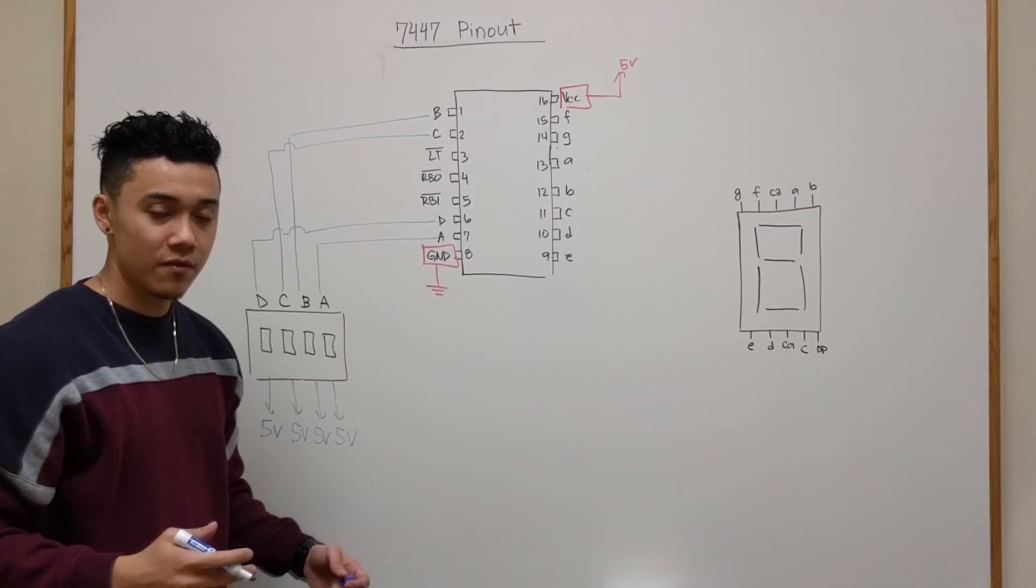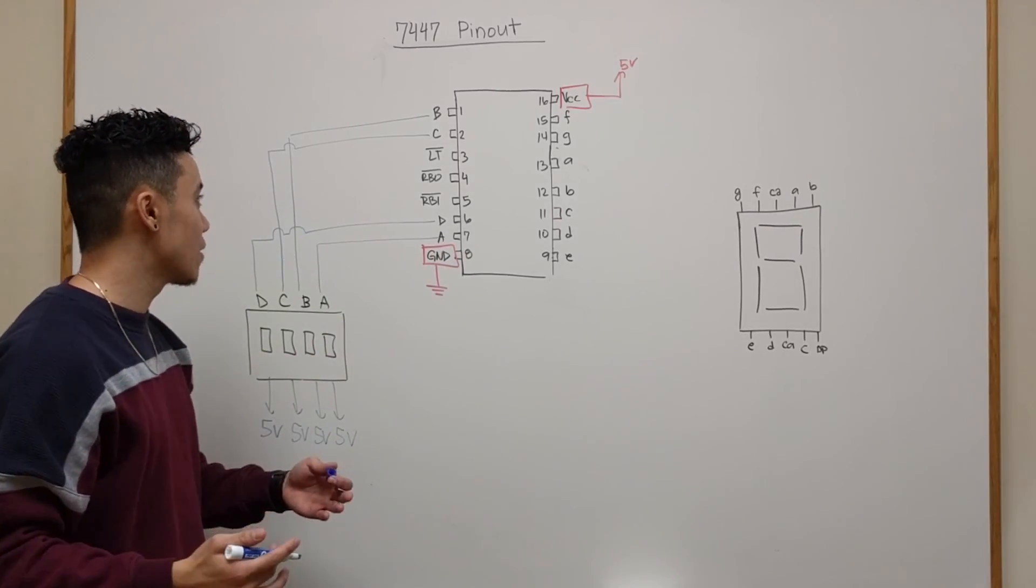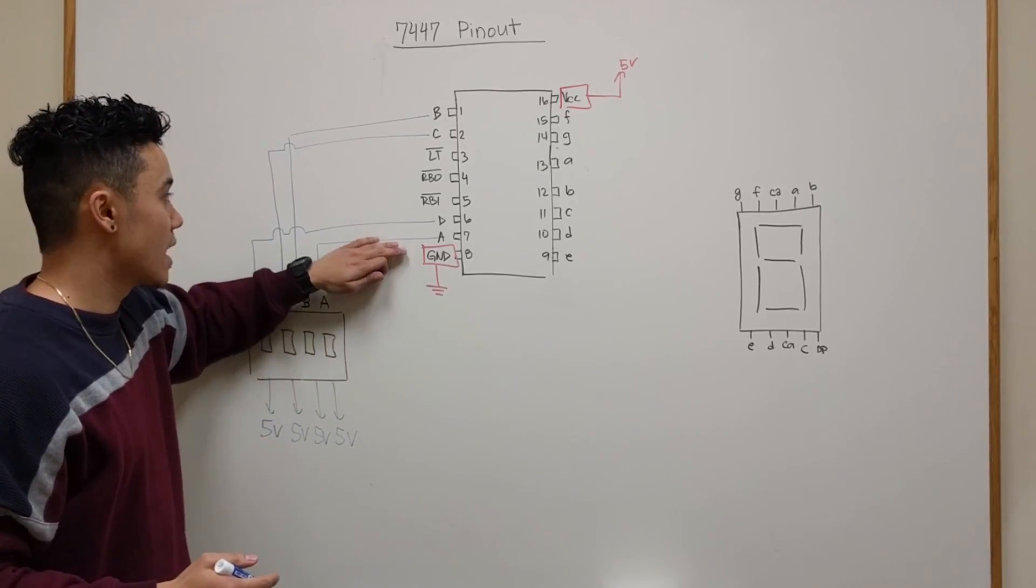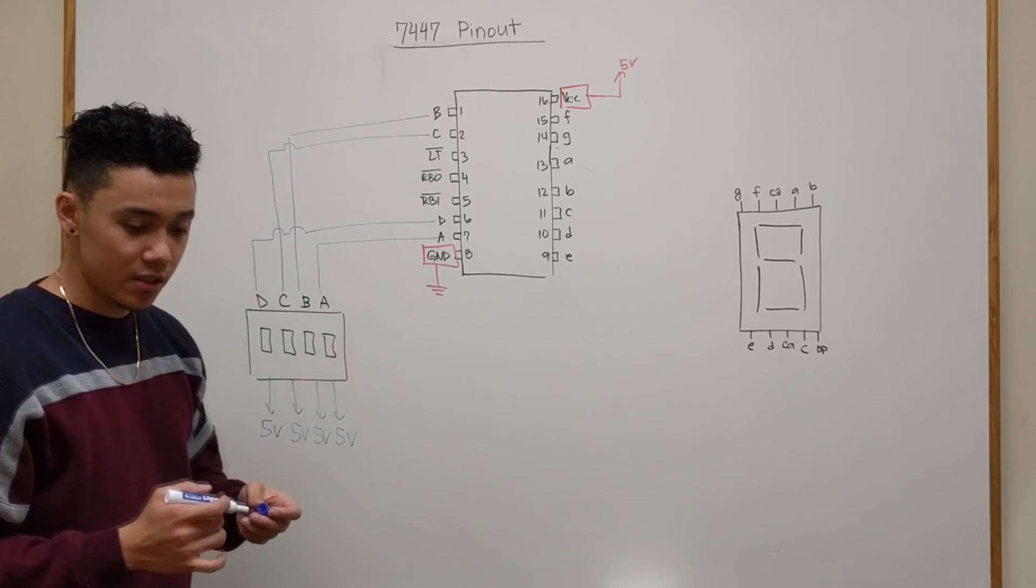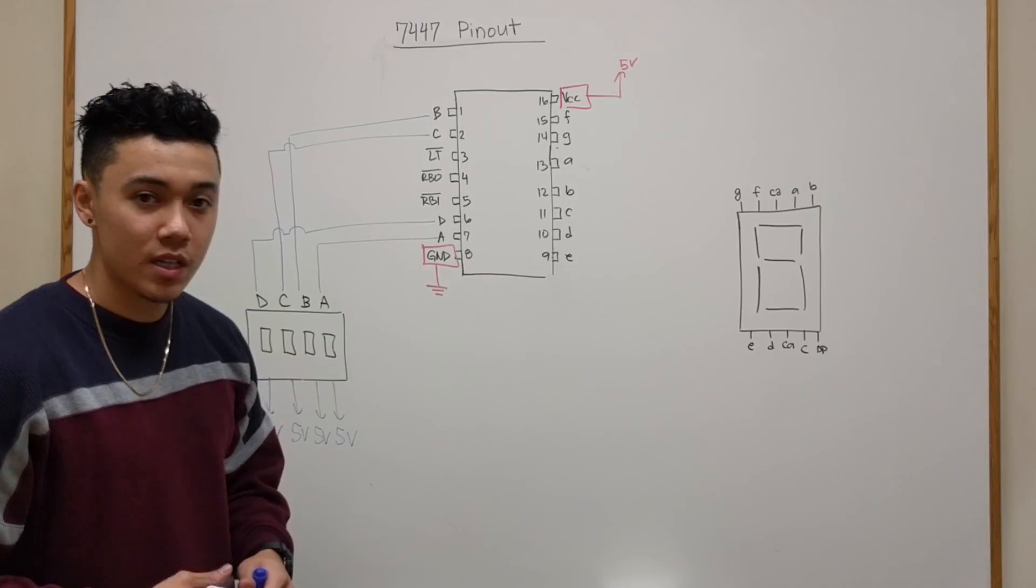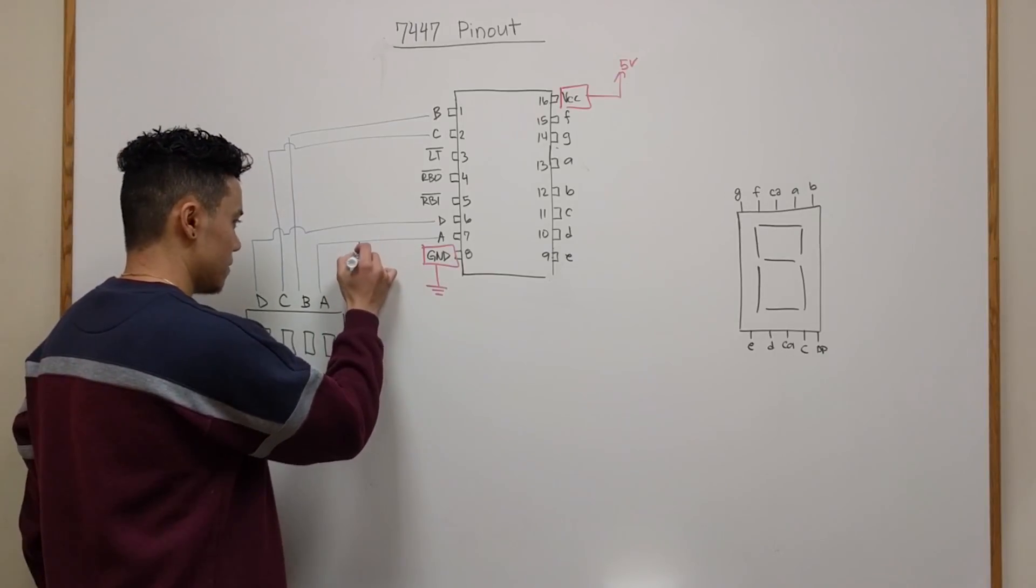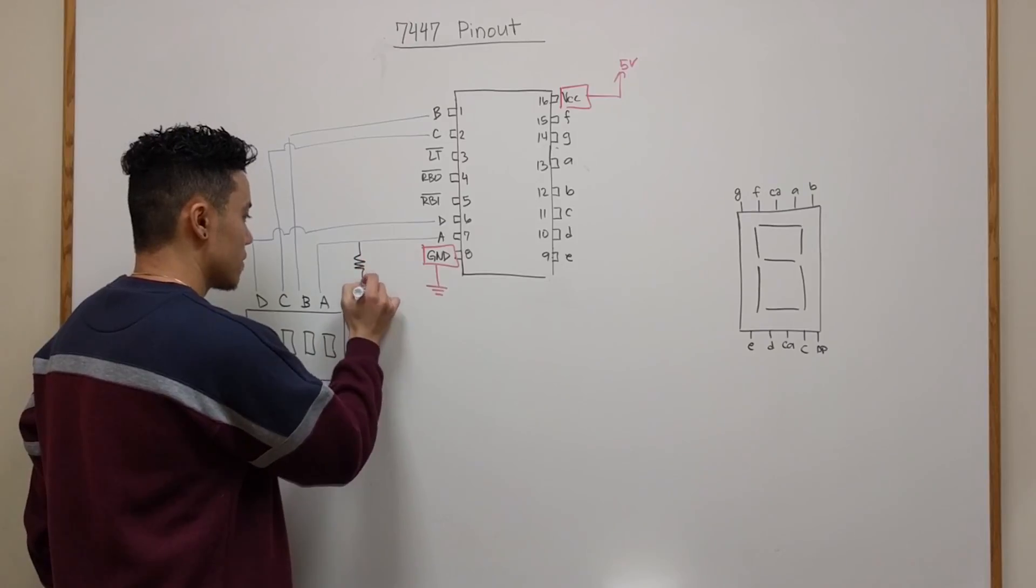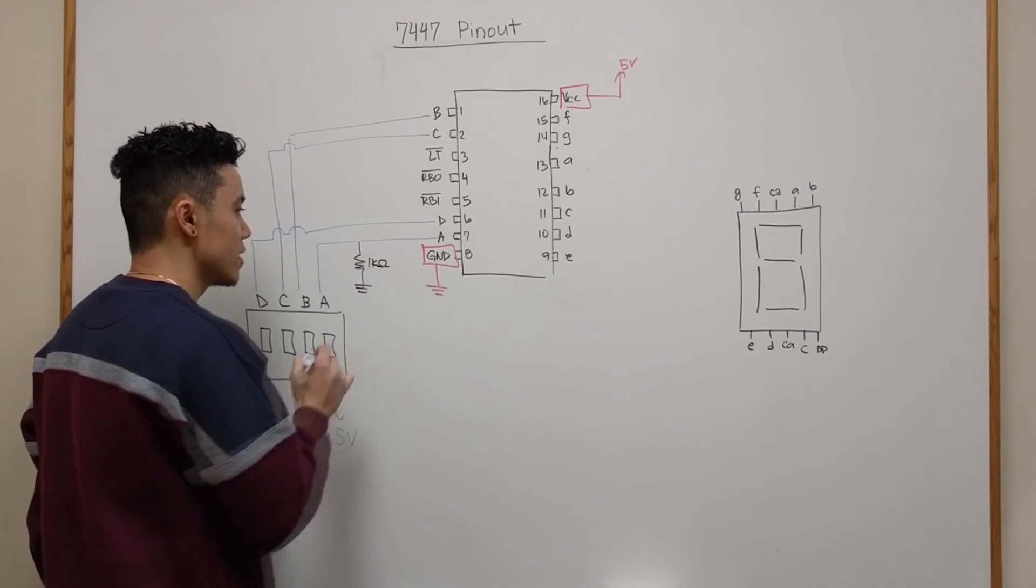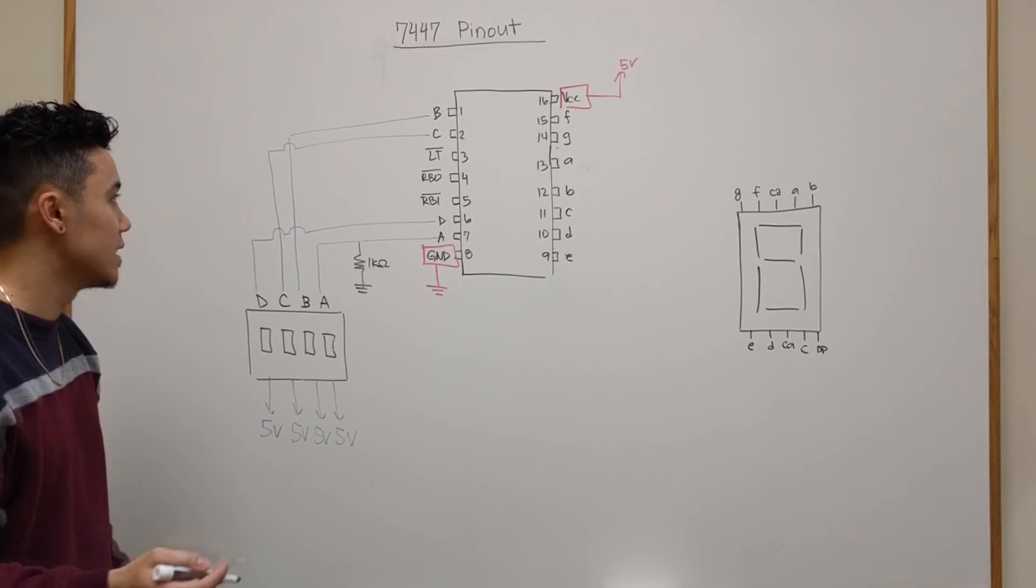To remedy that we have to tie pins A, B, C, and D to ground and we're going to do that with our 1 kilohm resistor. So we'll tie pin A to ground using our 1k ohm resistor and we'll do the same things for pins B, C, and D.